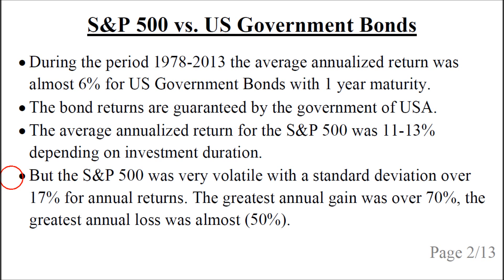But the S&P 500 was also very volatile, with a standard deviation over 17% for annual returns. The greatest annual gain was over 70% and the greatest annual loss was almost 50%.